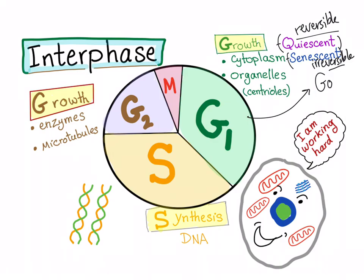The reversible one is called quiescent. The irreversible is called senescent. How to know which is which? Remember, you can be quiescent and then go back to work or to play soccer or whatever. But grandpa is senile — he cannot go back to the good old days. Sorry, grandpa, no offense.